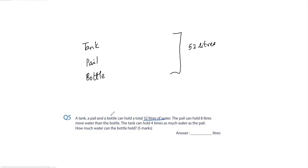Suppose the bottle holds a certain amount — call it one box. The pail holds that same amount plus 8 liters more. The tank holds four times as much as the pail.